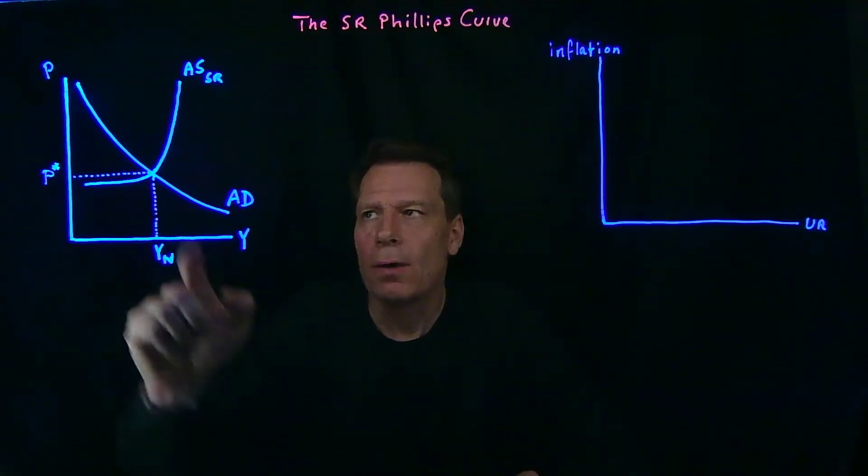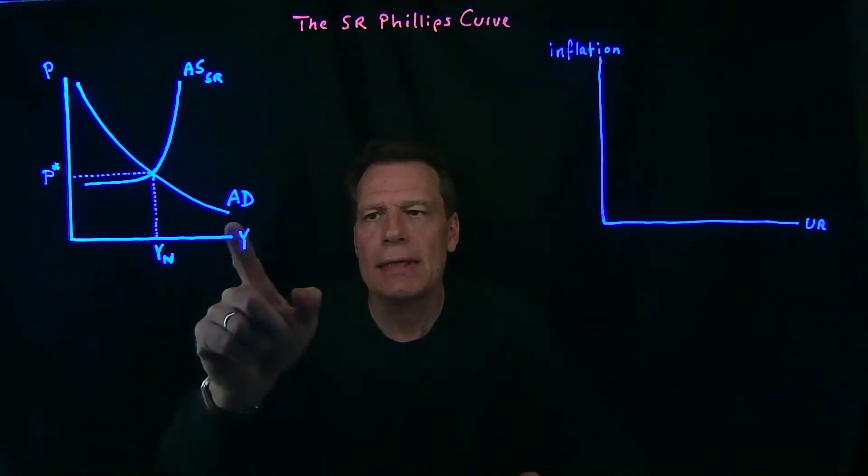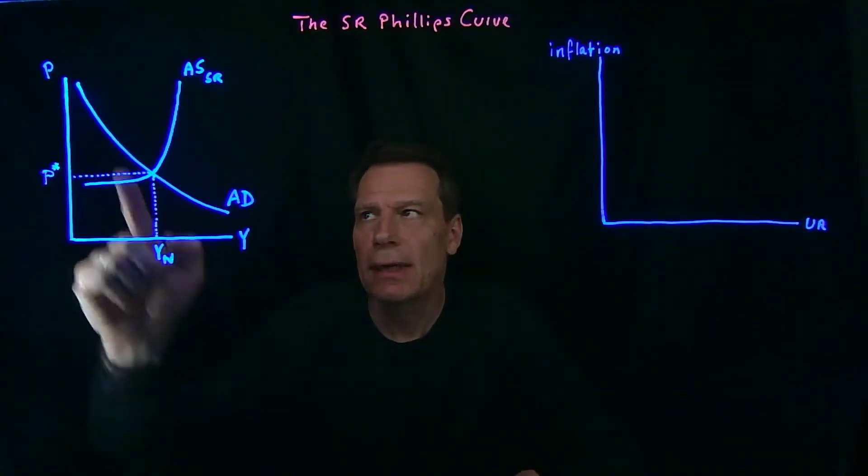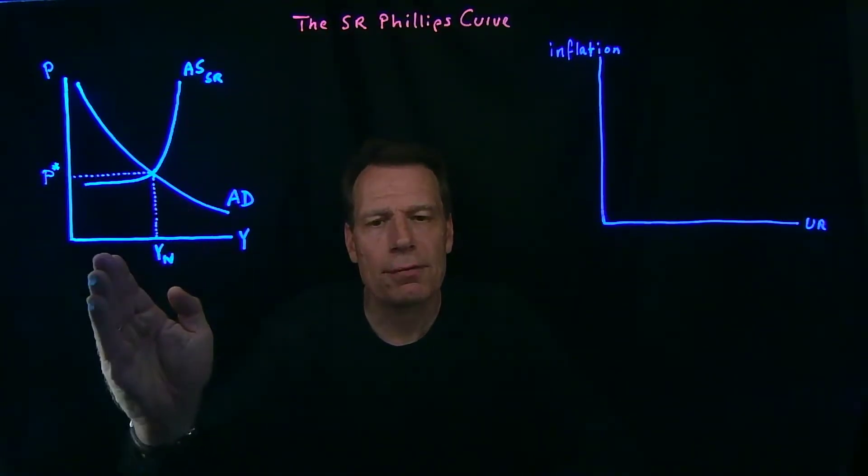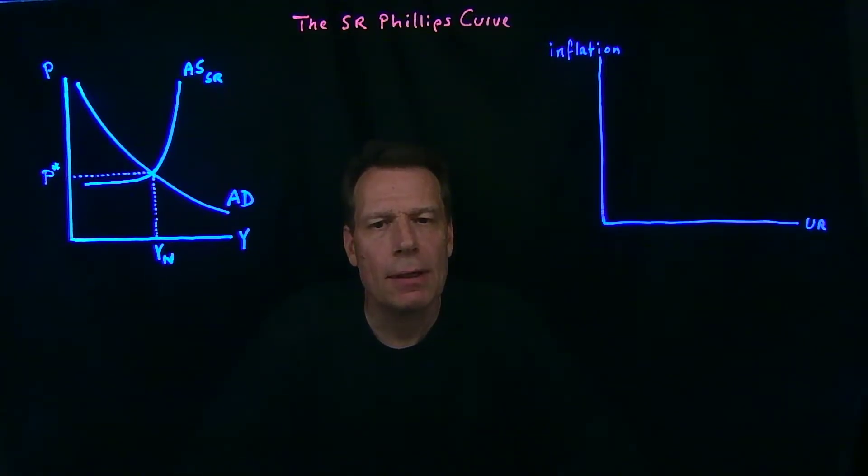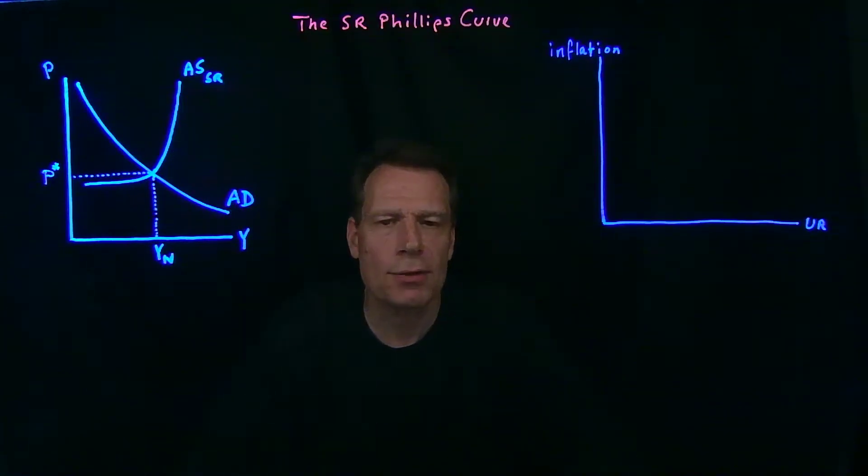We've now arrived at a graph with an aggregate demand curve that tells us the relationship between the equilibrium level of GDP and the price level, and an aggregate supply curve that in the short run is relatively flat to the left of the natural level of GDP where prices are sticky, but gets increasingly steep as we move to the right of the natural level of GDP.